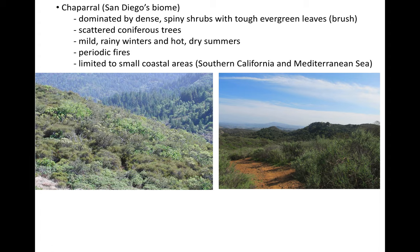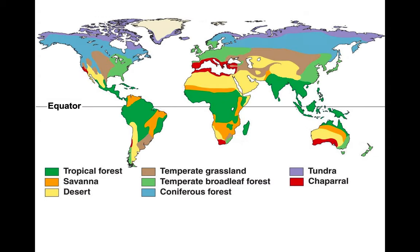The chaparral biome is shown in red on the map, right around 30 degrees north latitude and 30 degrees south latitude. They're generally near coastlines, on the western side of continents. San Diego has perfect weather — people come from all over the world to enjoy it. The chaparral biome and Mediterranean climate is amazing.